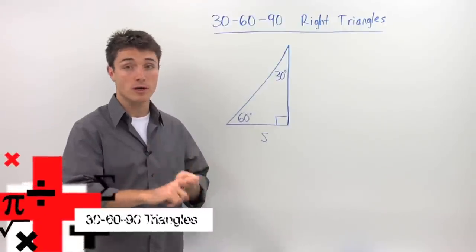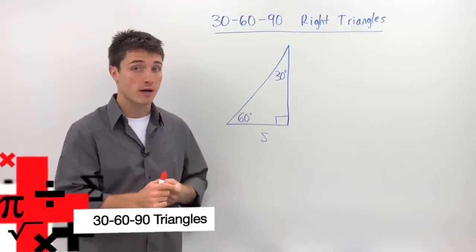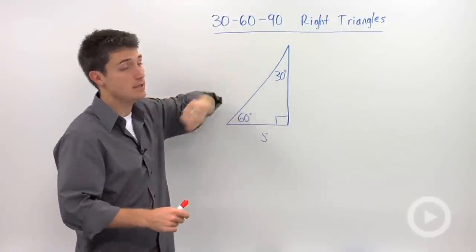There are two special right triangles: 45-45-90 and 30-60-90 triangles.